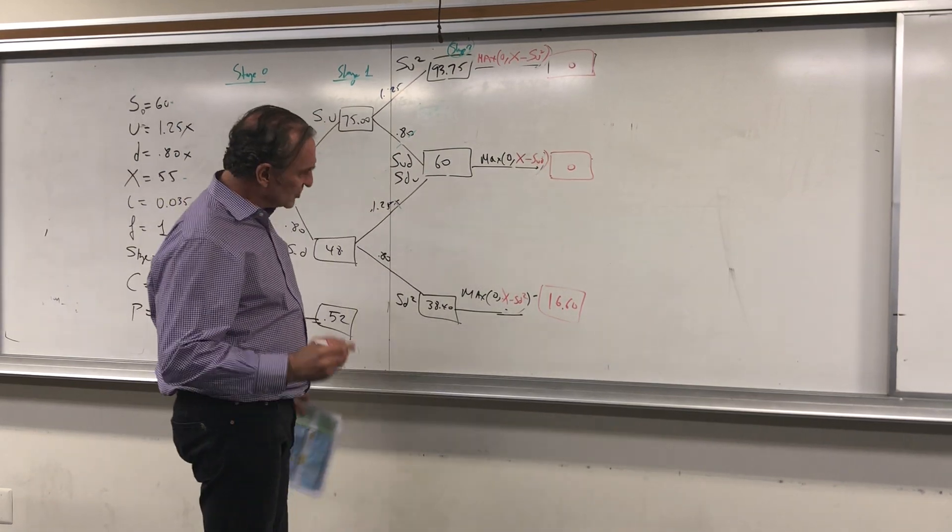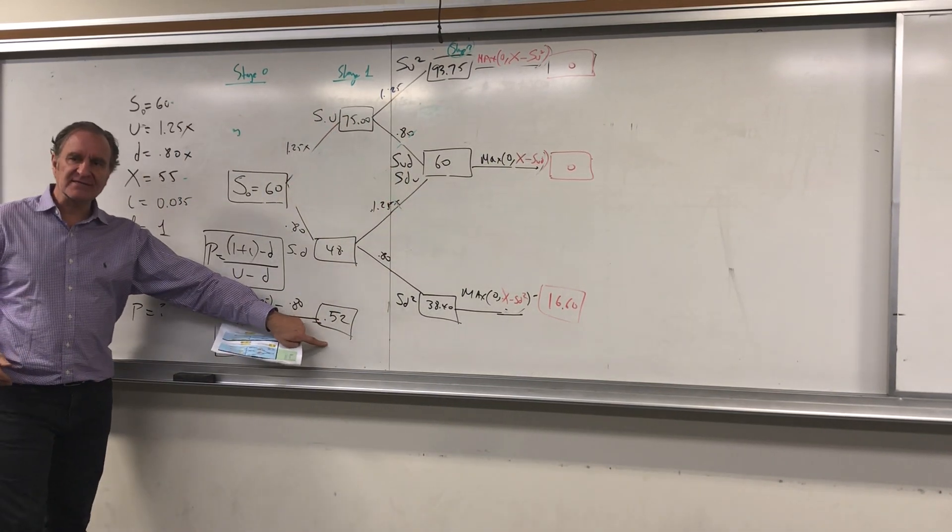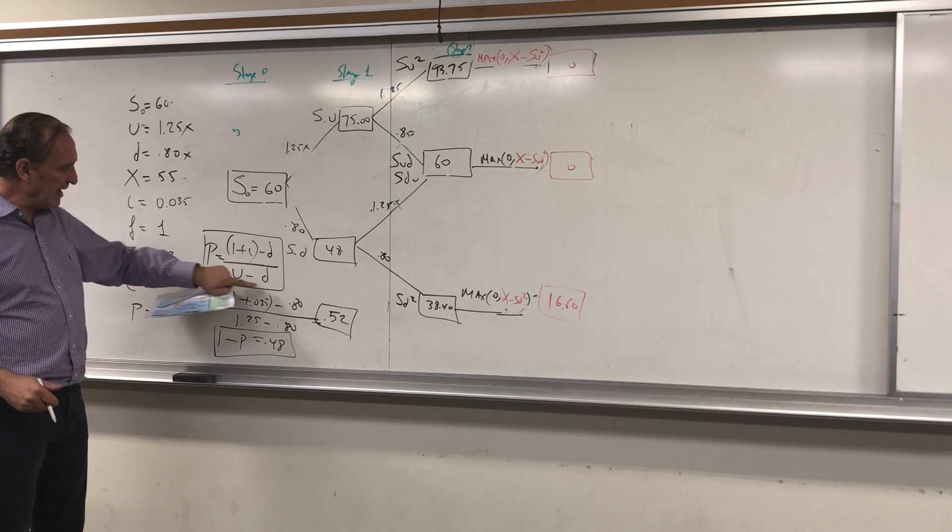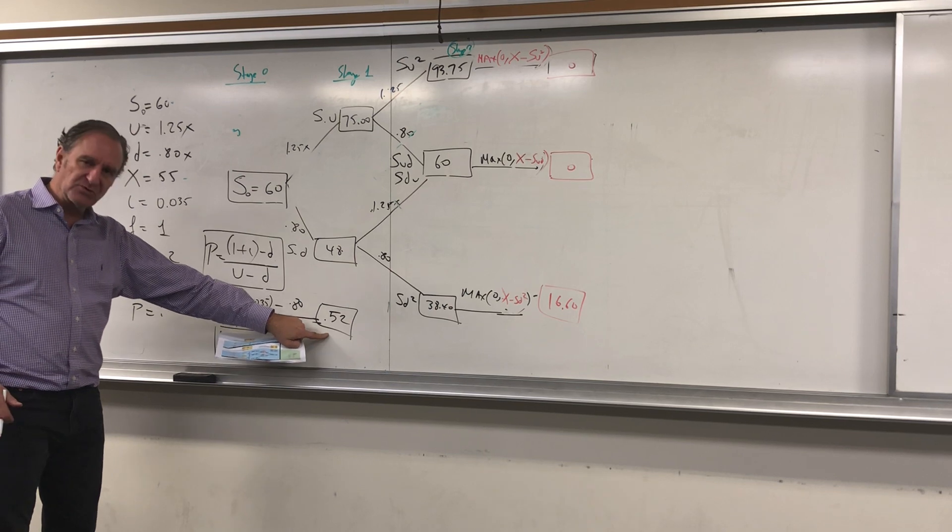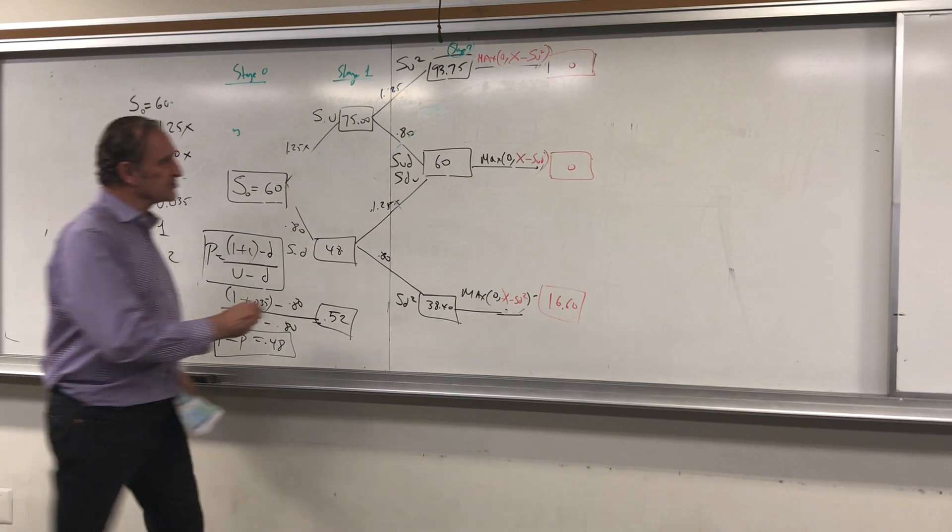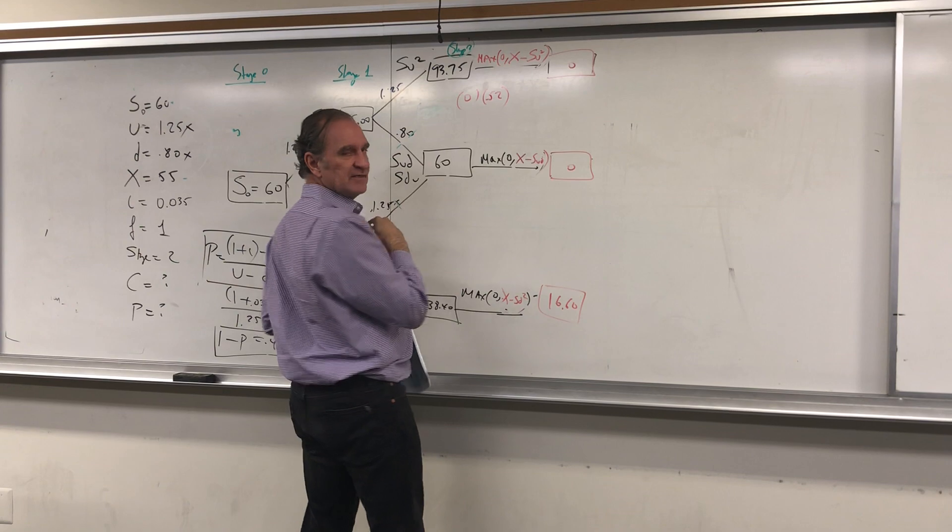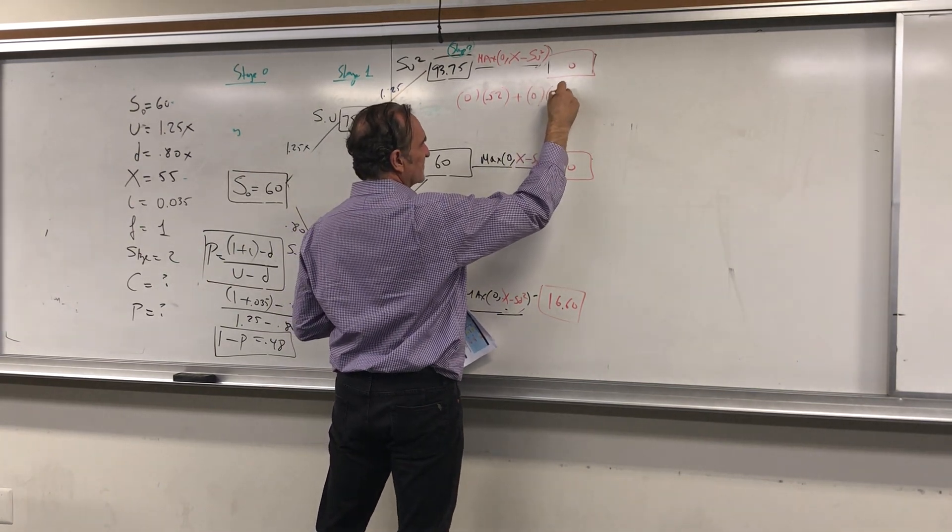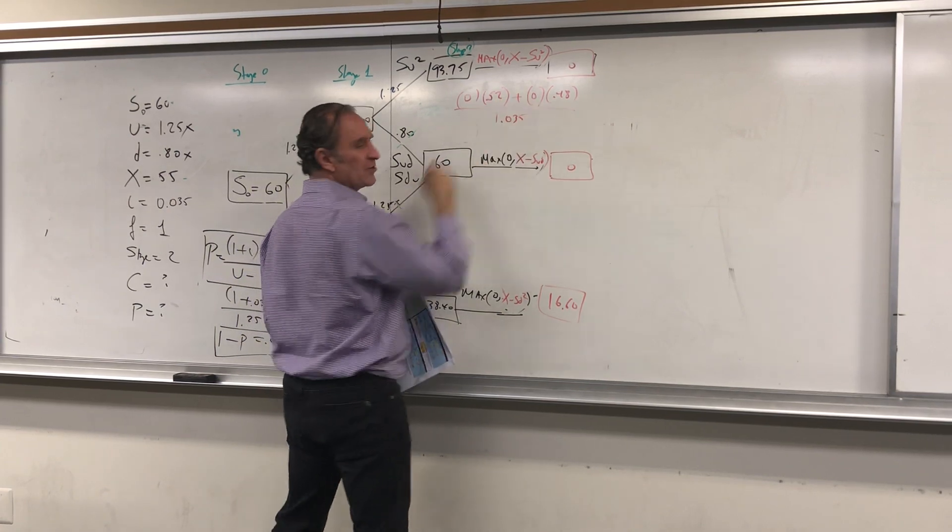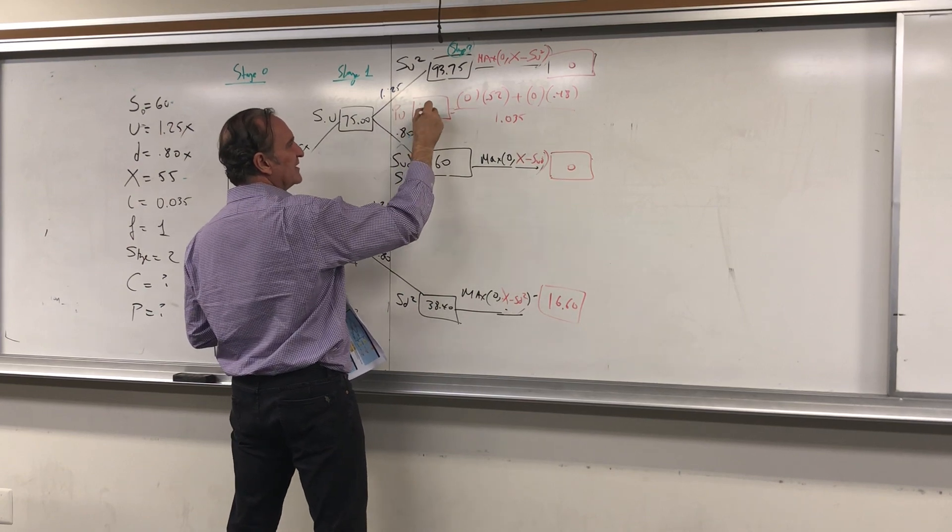Here we're going to calculate the probability that we did on the call option, which is (1 + i - d)/(u - d), to get the probability of going up 52% and going down 48%. So if I do the calculations: 0 times 52% probability plus 0 times 48%, and you're going to bring it back. Of course, 0 numerator, so here the put option up is 0.